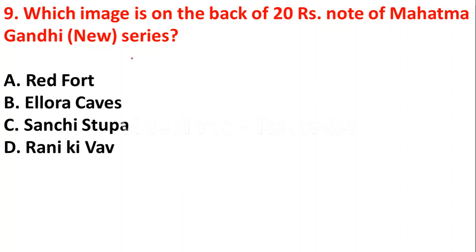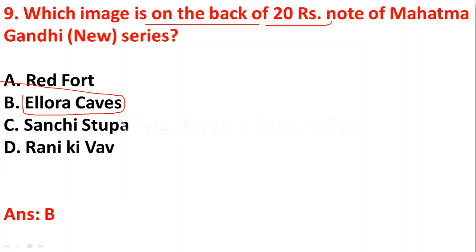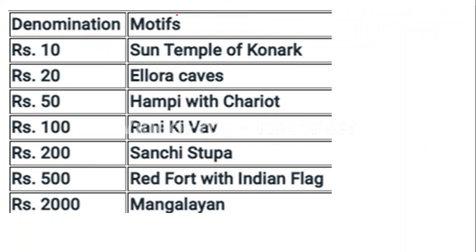Question nine: which image is on the back of the 20 rupees note in the Mahatma Gandhi series? Options are Red Fort, Ellora Caves, Sanchi Stupa, Rani Ki Vav. The answer is Ellora Caves. For reference: 10 rupees — Sun Temple of Konark; 20 rupees — Ellora Caves; 50 rupees — Hampi with chariot; 100 rupees — Rani Ki Vav; 200 rupees — Sanchi Stupa; 500 rupees — Red Fort with Indian flag; 2000 rupees — Mangalyaan.